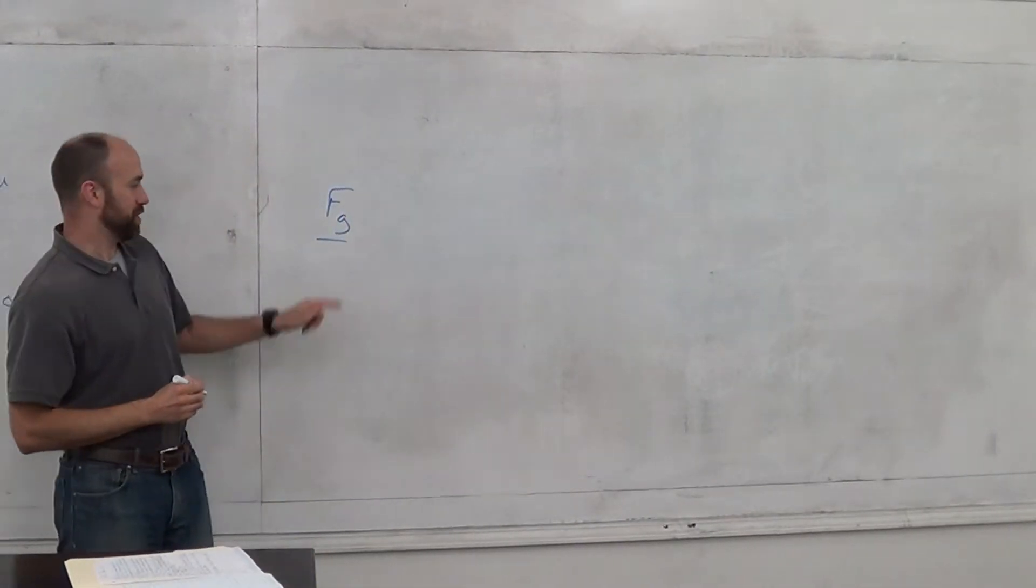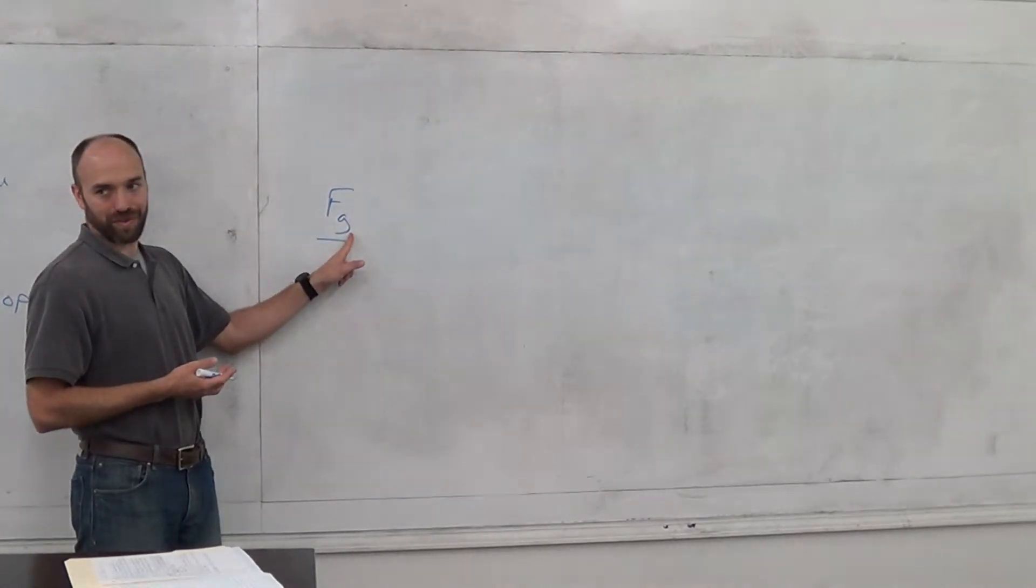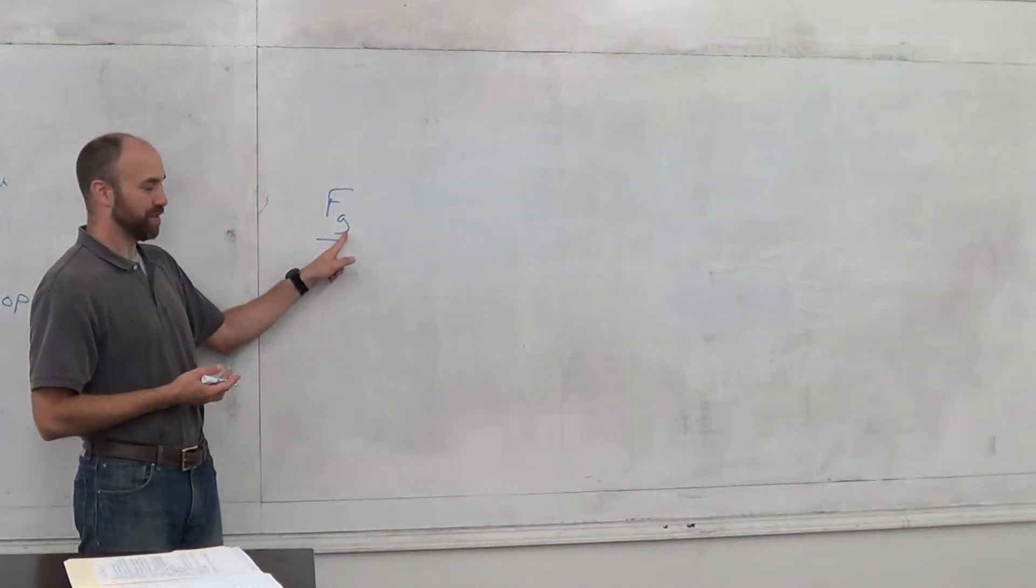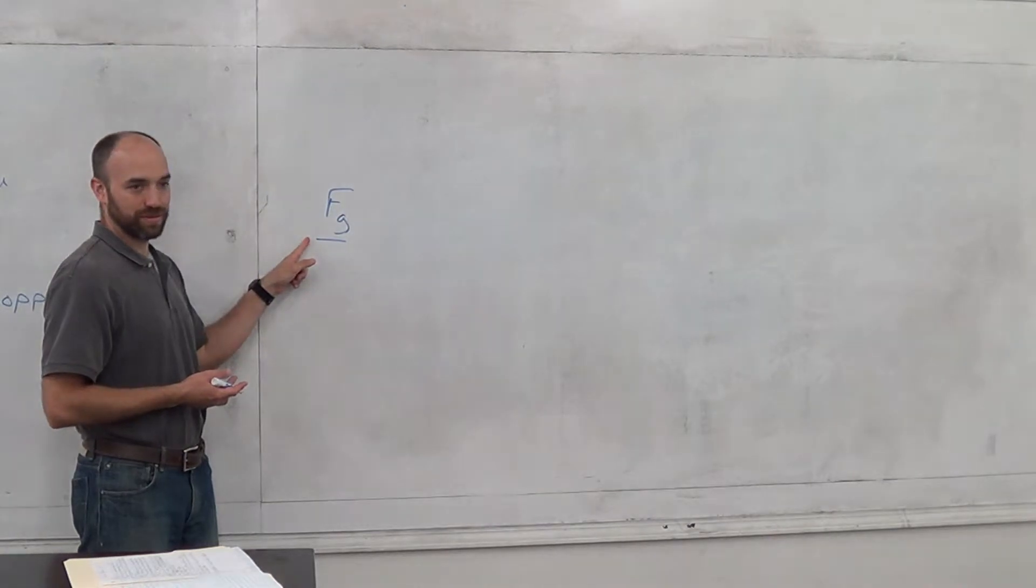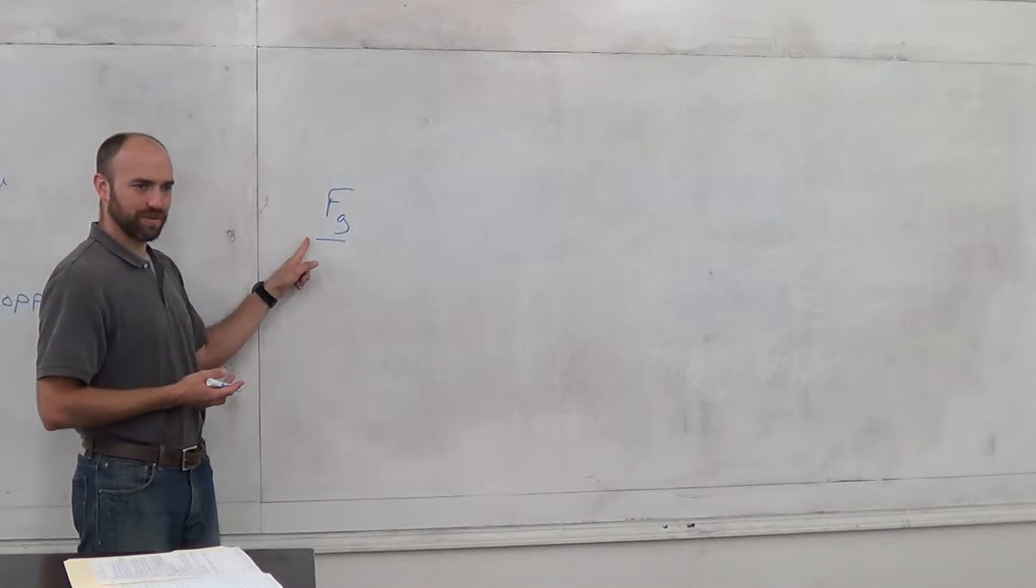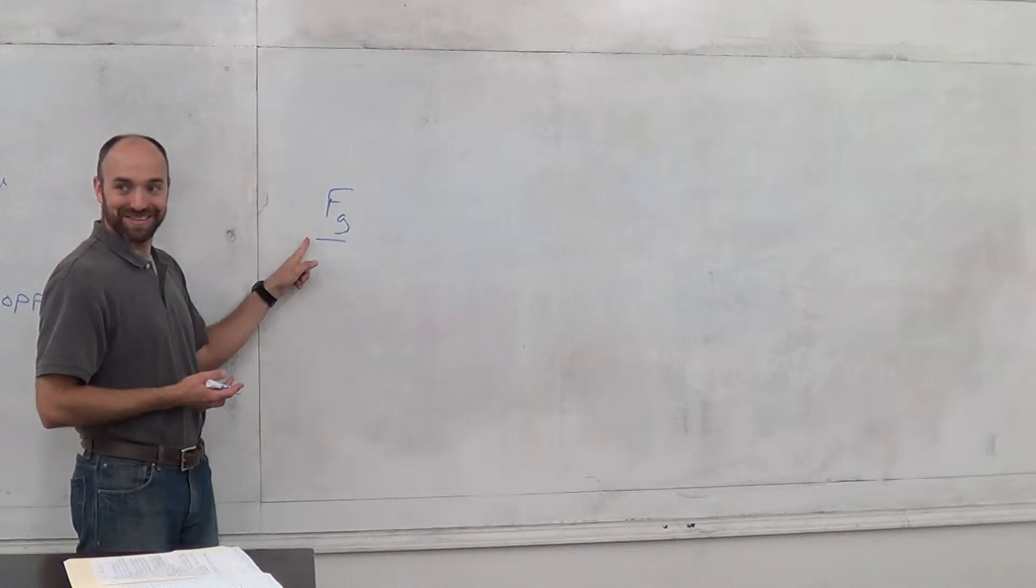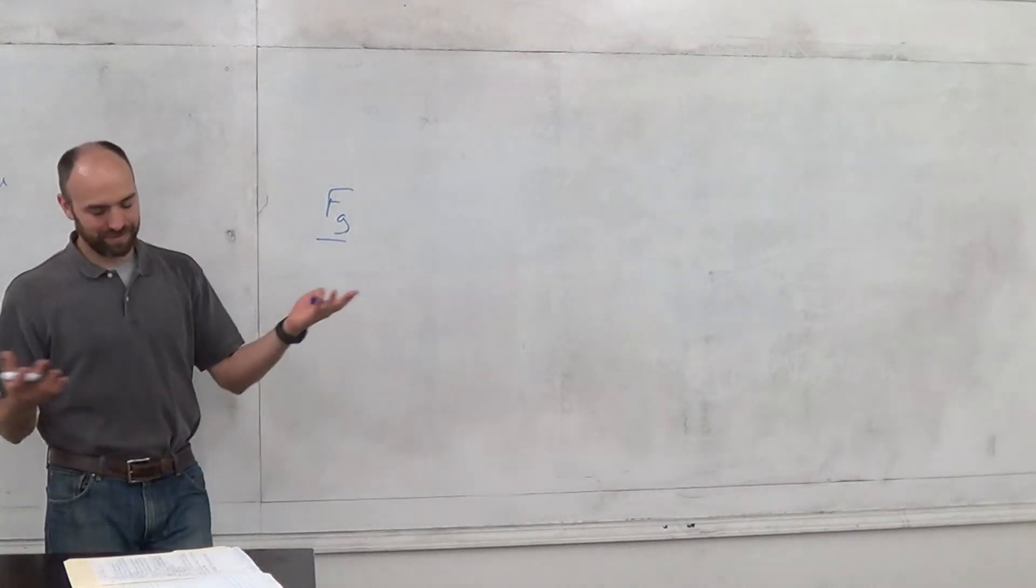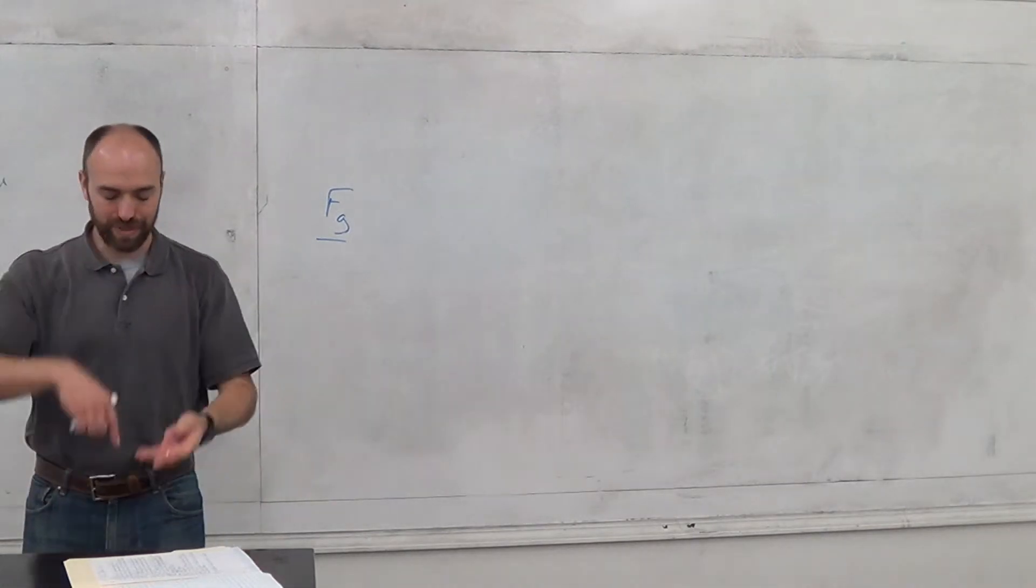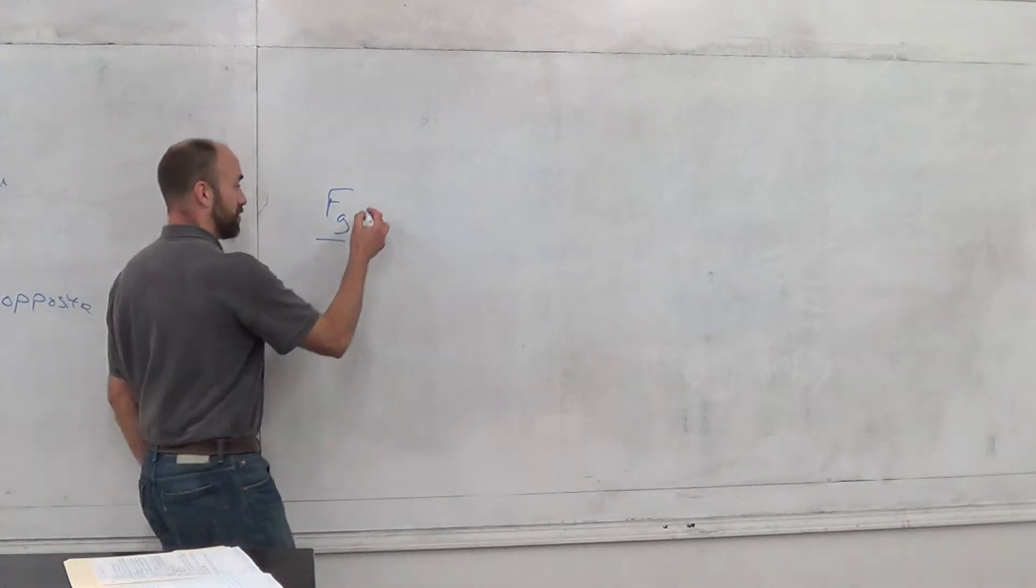The first thing you need to know, the force of gravity. F stands for force, G stands for gravity. So this is the force of gravity. What's the underline mean? It's a vector. It has a direction. Which way is the force of gravity going to go? Every single time it goes down.